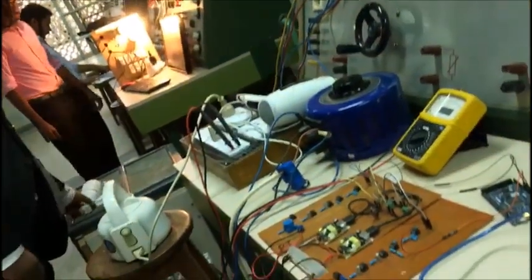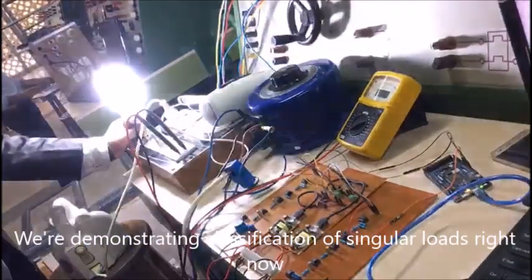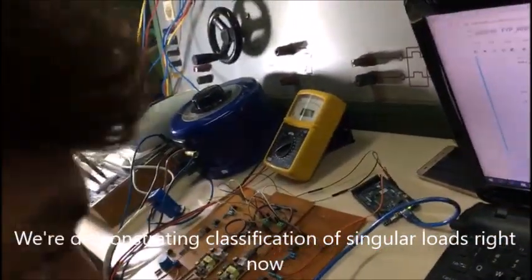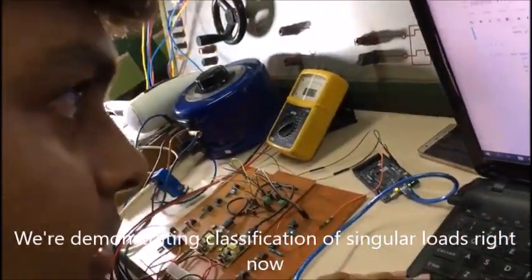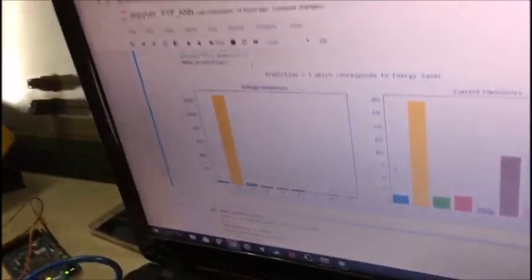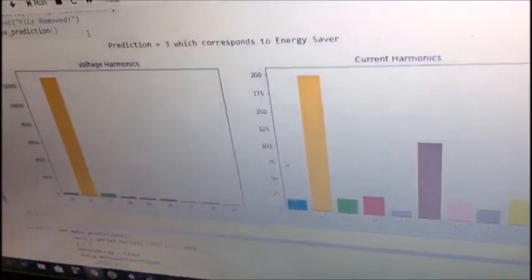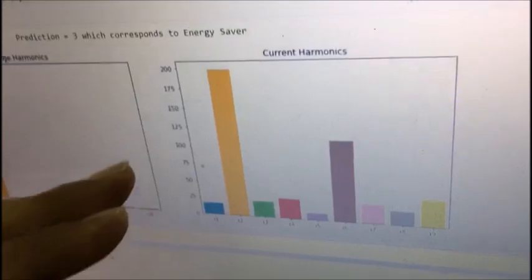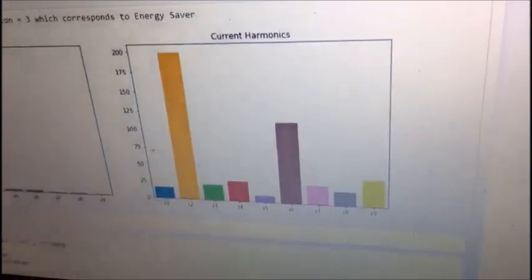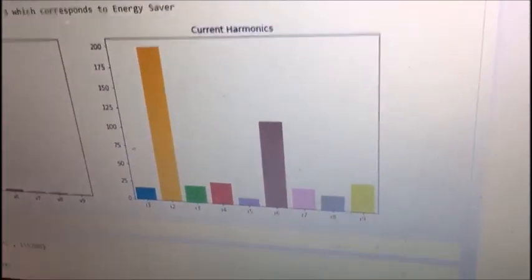Now we're going to change that to an energy saver. Now we're going to check what the neural network says and it says prediction 3 which corresponds to energy saver. And notice how the energy saver has a lot of harmonics and how it's supposed to be.